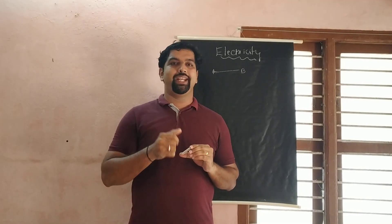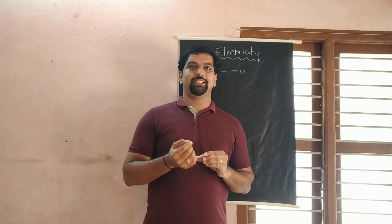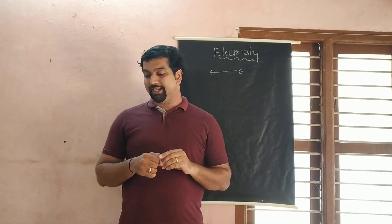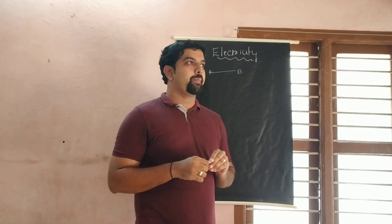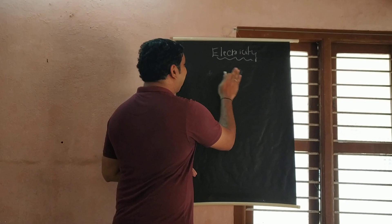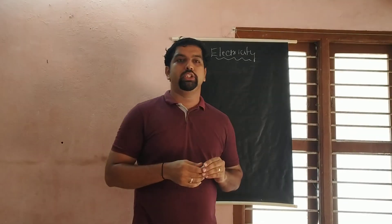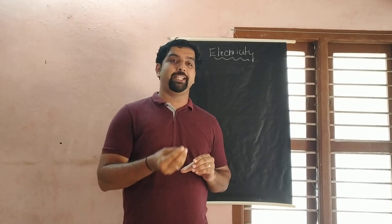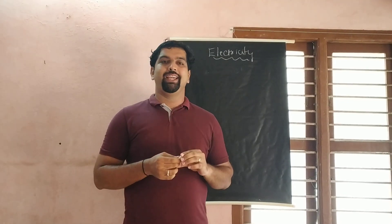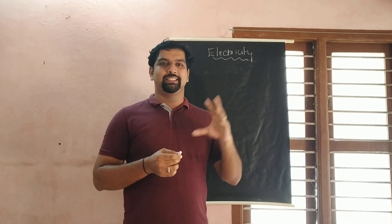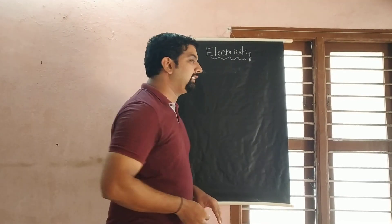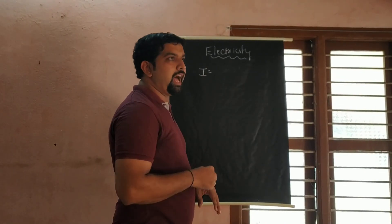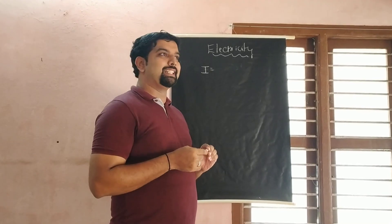Then there is the insulator. An insulator is a substance or material which will not allow the current to pass through it. Coming back to the main topic — electricity or electric current is nothing but the flow of electrons or flow of charges. This is the definition of electric current. The symbol we use to represent electric current is I.